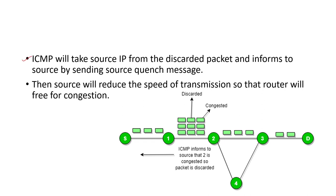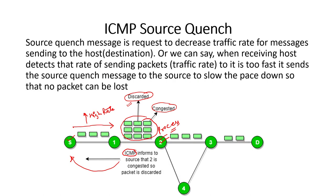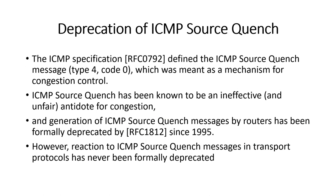ICMP will take the source IP from the discarded packet. Since the discarded packet is an IPv4 packet with an IPv4 header, the router will take the source IP address from that IPv4 header and inform the source by sending a source quench message. The source will then reduce the speed of transmission, freeing the router from congestion. The router gets the address of the source from the packet itself.